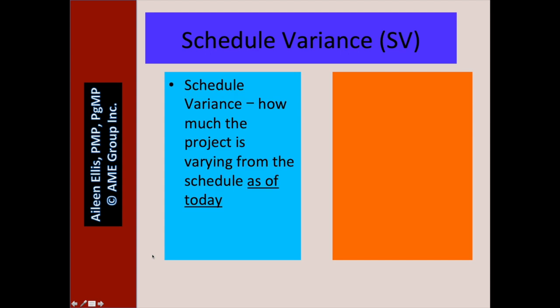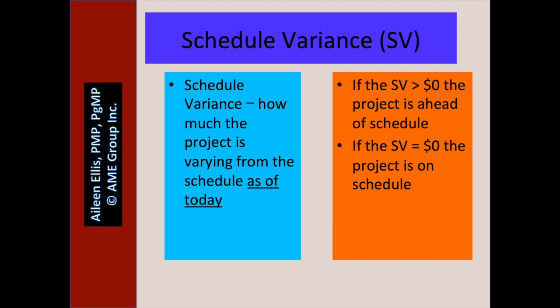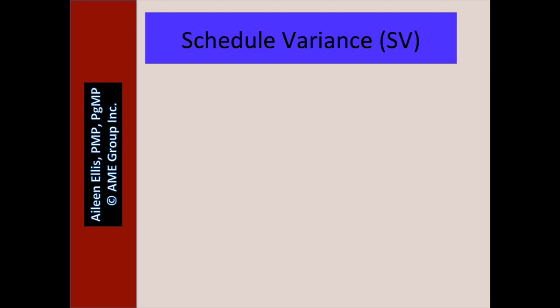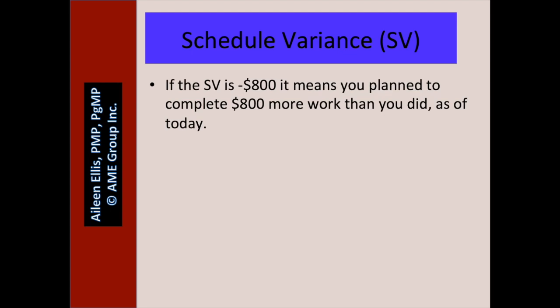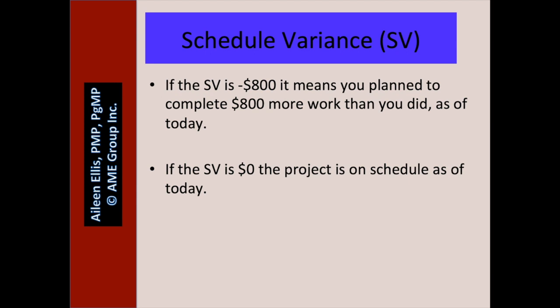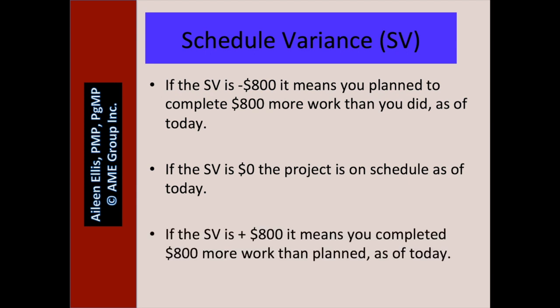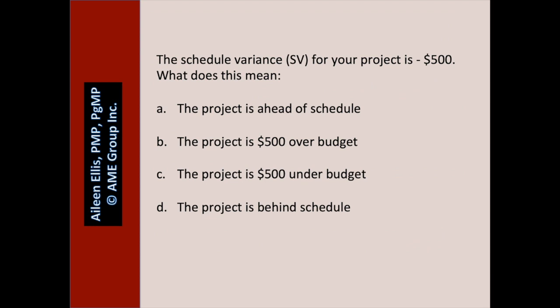Schedule variance — in my own words — is how much the project is varying from the schedule as of today. If the schedule variance is positive, the project is ahead of schedule. If the schedule variance equals zero, the project is on schedule. If the schedule variance is less than zero, the project is behind schedule. For example: if the schedule variance is negative $800, it means you planned to complete $800 more work than you did as of today — we're behind schedule. If it's positive $800, it means you completed $800 more work than planned as of today.